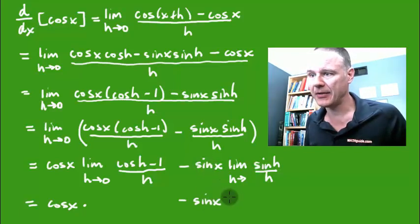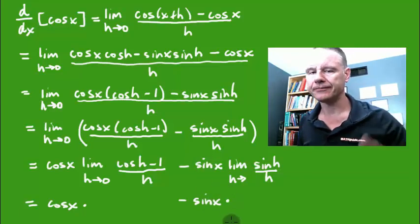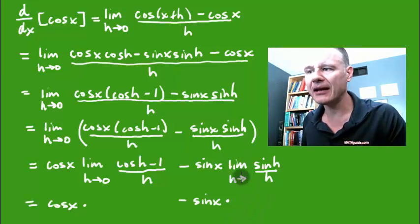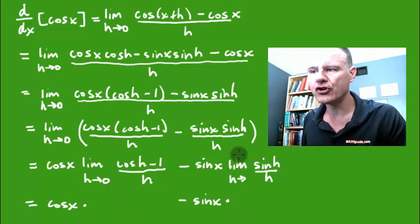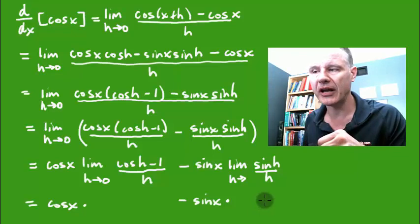Because I'm taking the cosine of x times this limit minus the sine of x times this limit. Mathematically, not so easy to prove to you.